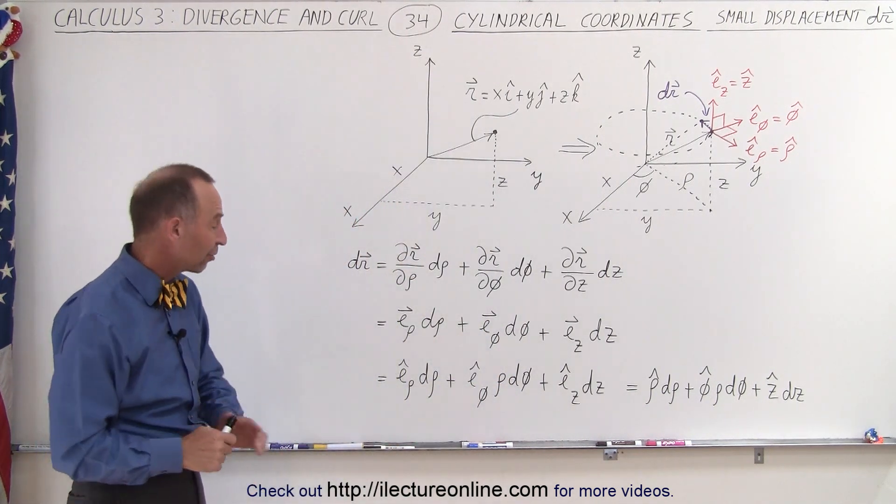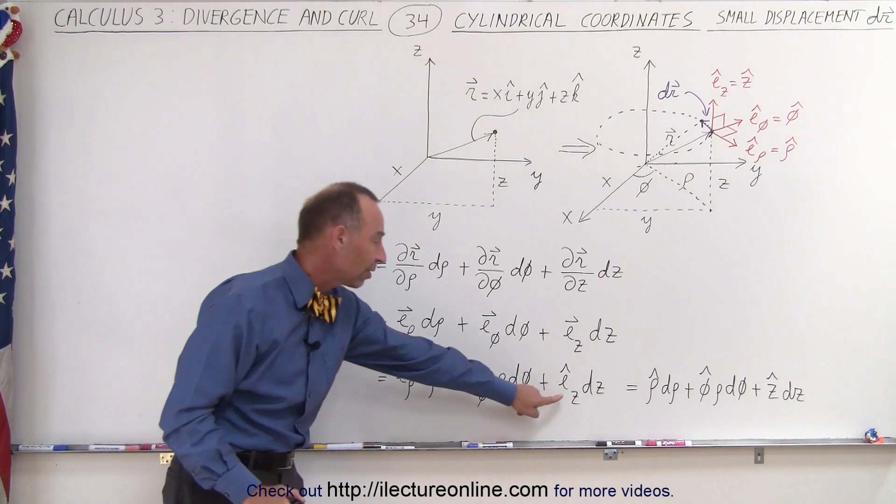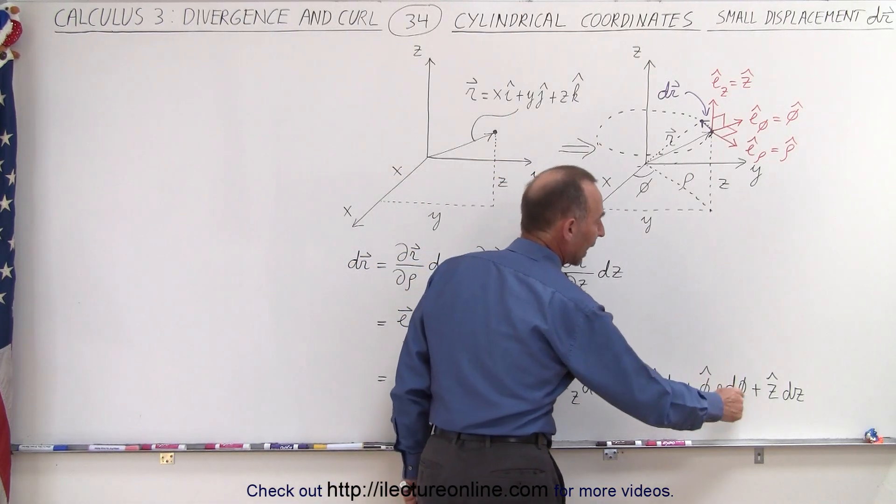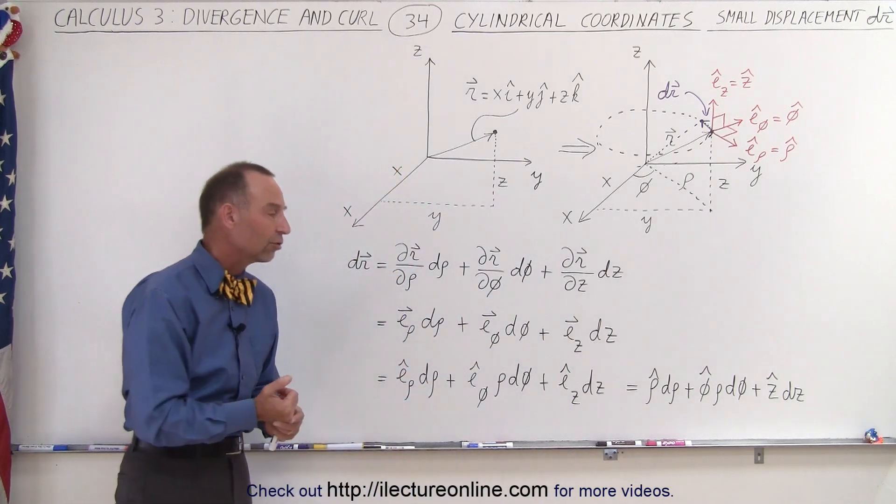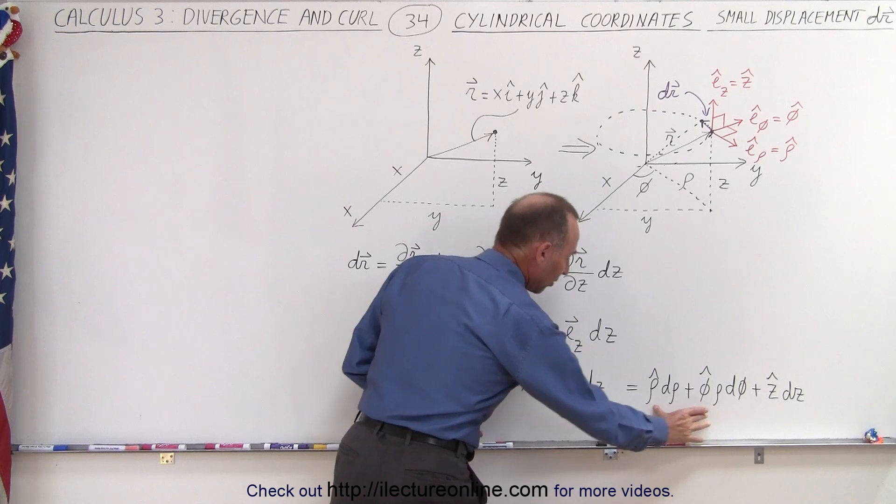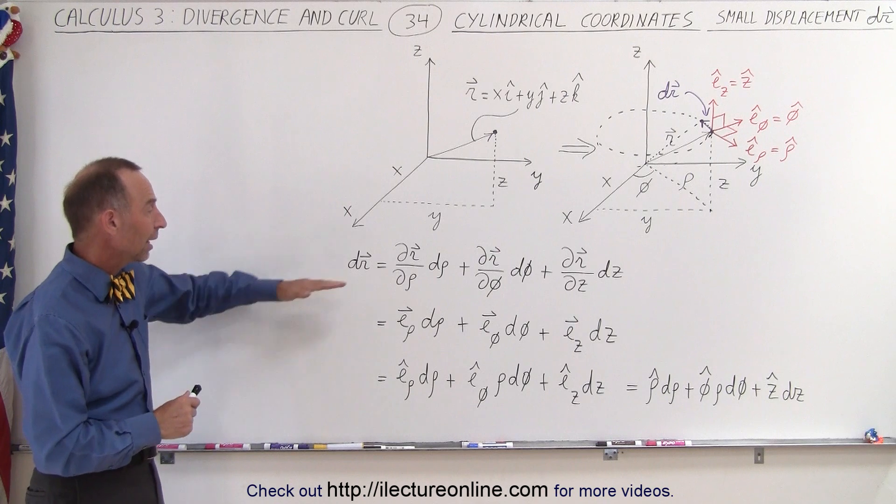Now if you don't like the notation of the little letter e sub rho, sub phi, sub z, you can replace those simply by rho with a little hat on it, phi with a little hat, z with a little hat - that also represents the three unit vectors in cylindrical coordinates. Many of us are used to seeing it like this rather than this. It all depends what textbook you use.